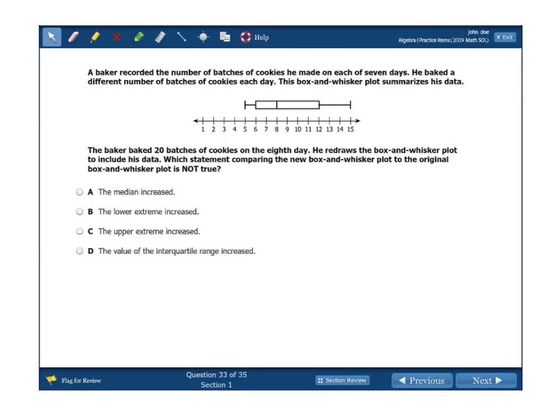Moving on to a box and whisker plot question. Baker recorded the number of batches of cookies he made on each of 7 days. He baked a different number of batches of cookies each day. This box and whisker plot summarizes his data. It's got a low of 5 and a high of 15, median of 8, 6 and 12 for the quartiles. The baker baked 20 batches of cookies on the 8th day. He redraws his box and whisker plot to include his data. Which statement comparing the new plot to the original plot is NOT true?